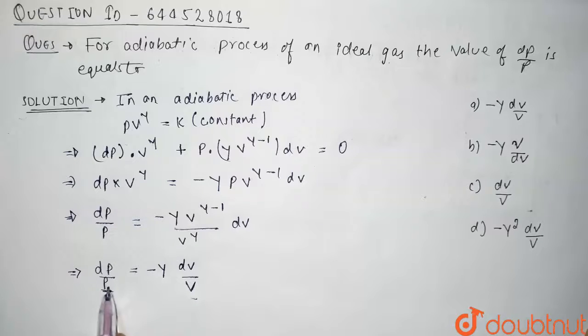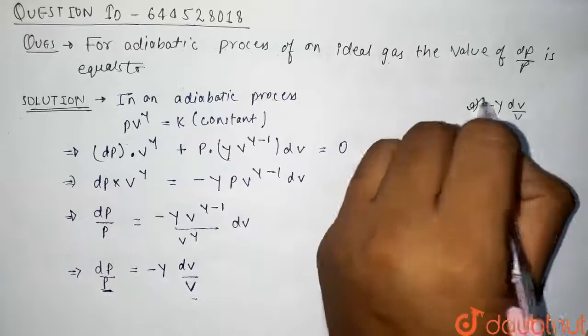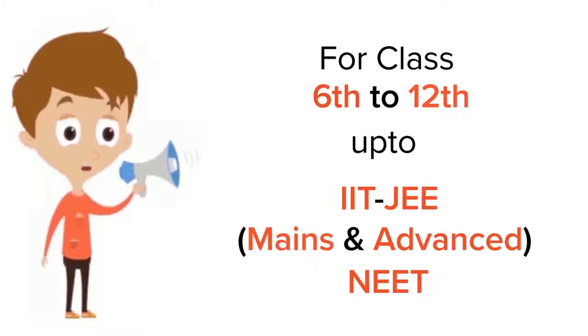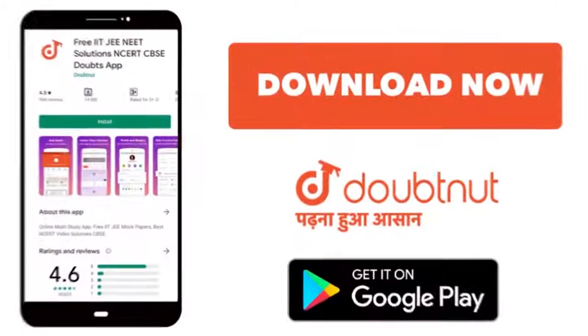So the value of dP/P comes out to be minus γ times dV/V, so correct option is option A. Thank you guys. For class 6 to 12, IIT, and NEET level, trusted by more than 5 crore students, download Doubtnut app today.